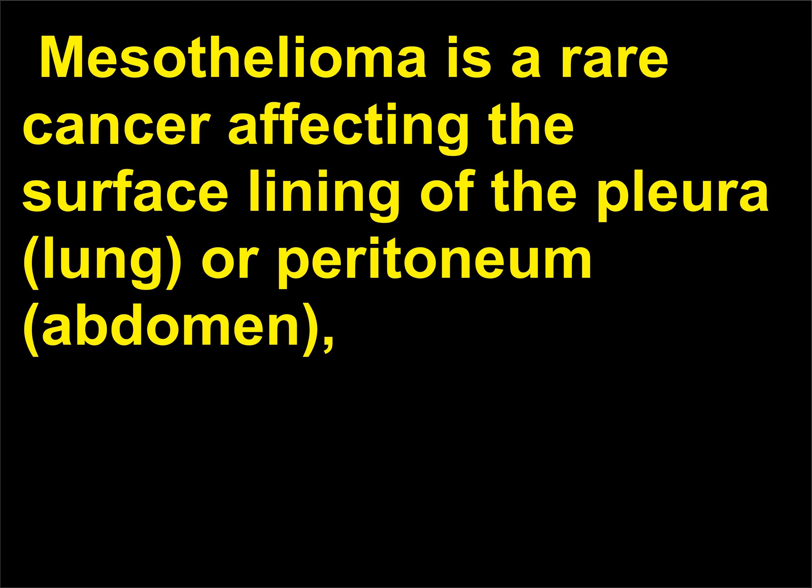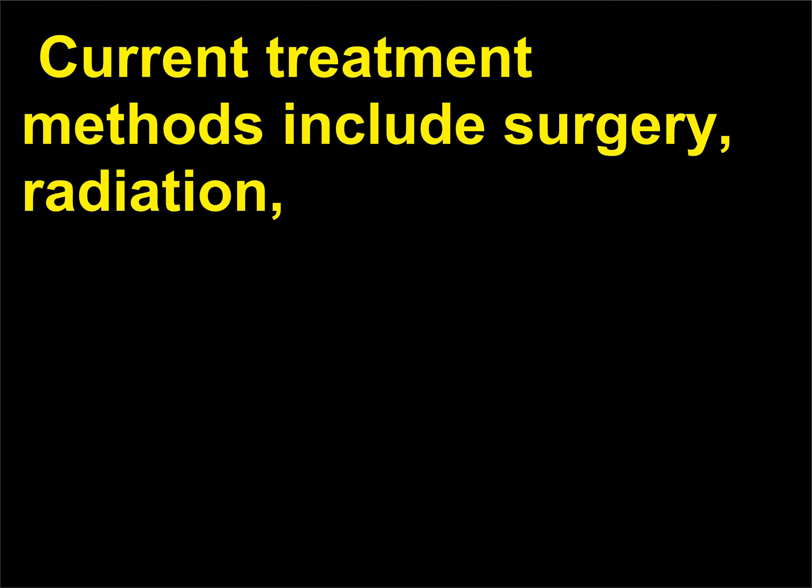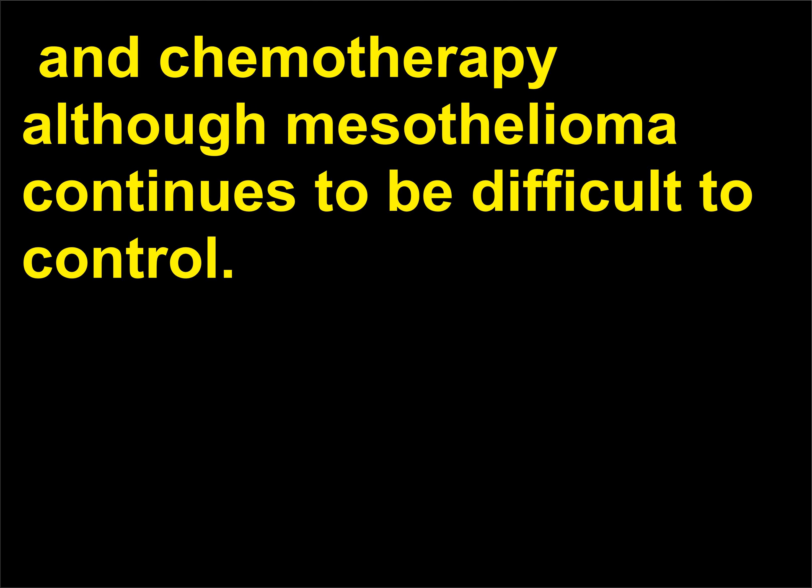The American Lung Association reports that prolonged exposure doubles the likelihood that a smoker will develop lung cancer. It takes cancer 15 to 30 years to develop from asbestos. Mesothelioma is a rare cancer affecting the surface lining of the pleura, lung, or peritoneum, abdomen, which generally spreads rapidly over large surfaces of either the thoracic or abdominal cavities. The current treatment methods include surgery, radiation, and chemotherapy, although mesothelioma continues to be difficult to control.